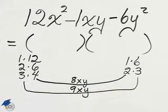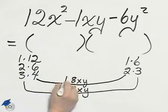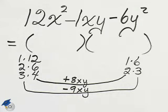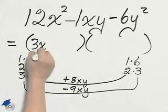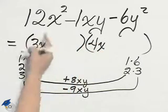My signs are different. I want the end product to have a negative 1. I'll make that 9 negative, the 8 positive, and now let's fit it into the blanks. Here is 3x and 4x, giving us our 12x squared.